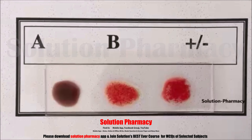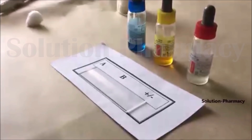The principle of the ABO blood grouping system is the agglutination reaction. To understand the agglutination reaction, let's start the experiment. For determination of blood group, a blood group kit is available. Inside this kit there are three antisera solutions: anti-sera A (blue color solution), anti-sera B (yellow color solution), and anti-sera D.